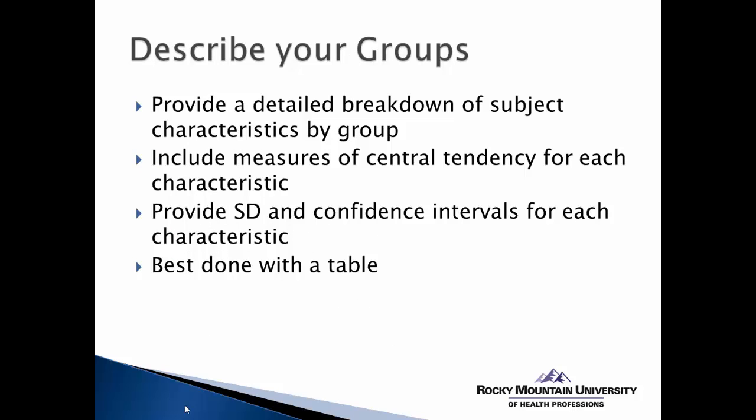So first, let's talk about describing your groups. It's important in most research to be able to describe the characteristics of your subjects, either as a whole or typically by group. That could include demographic information like age, gender, height, weight, and so on — depending on what's important to you in describing your sample or population. This is important for replication of research, so if someone is going to try and replicate your study, they need to have a good idea of what your subject demographics look like. So it's important you include the measures of central tendency for each of these characteristics or variables.